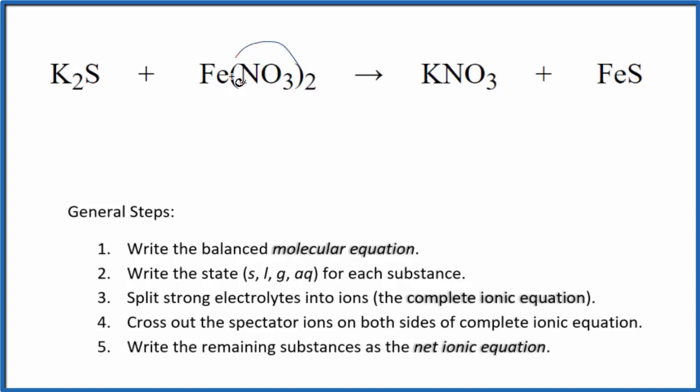When I look at it I can see that I have a nitrate here, two of them actually, and just one here. So I'm going to put a 2 in front of the KNO3. That balances the potassium. So I have one sulfur, one sulfur, one iron and one iron. So we've balanced the molecular equation.